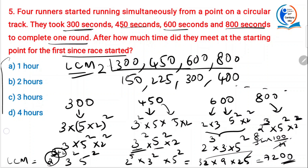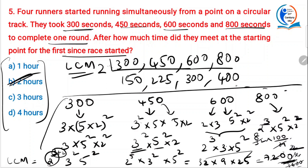7200 is not in the answer because 7200 is in seconds. To convert to hours, divide 7200 by 3600. That gives 2 hours. This is the simpler way, but you need practice. You will do that.